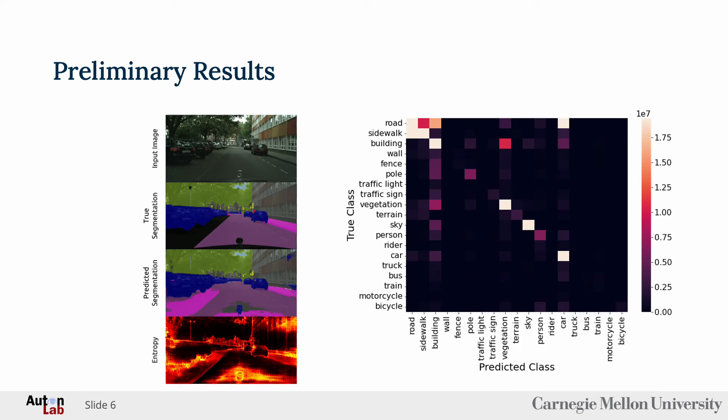Evaluation of these methods is still ongoing. However, here are some preliminary results for a single MC dropout model. In the left figure, we see the input image, its true segmentation, the predicted segmentation from our model, and the entropy between the true and predicted segmentation images.